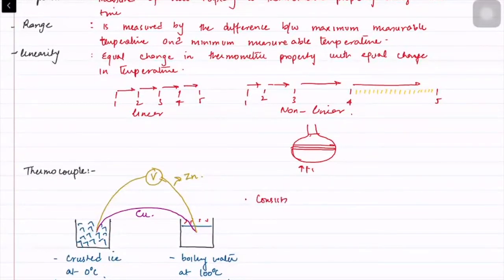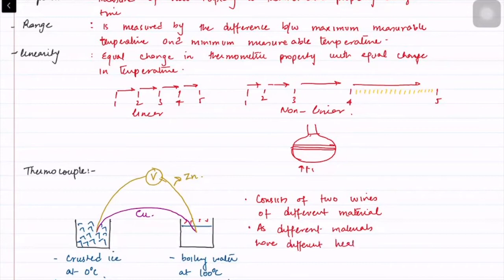Now there's a reason for it. This wire consists of two wires of different material because different materials have different heat flow rates depending on their conductivity.